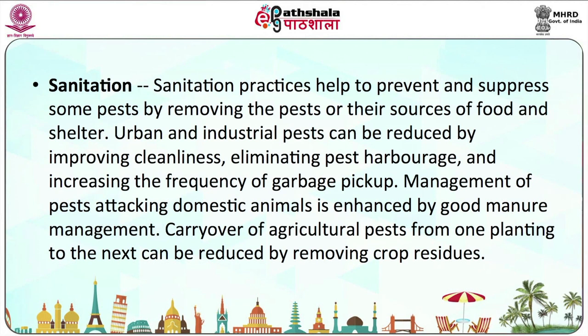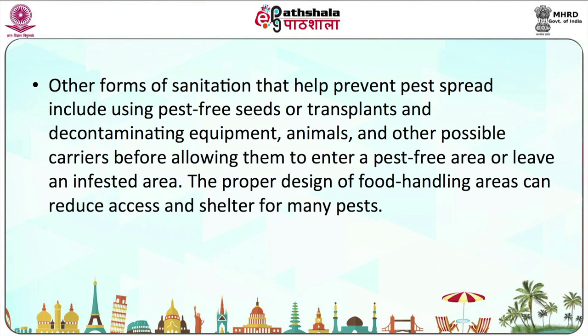Sanitation practices help to prevent and suppress some pests by removing pests or the resources of food and shelter. Urban and industrial pests can be reduced by improving cleanliness, eliminating pest harbourage, and increasing the frequency of garbage pickup. Management of pests attacking domestic animals is enhanced by good manure management. Carryover of agricultural pests from one planting to the next can be reduced by removing crop residues. Other forms of sanitation include using pest-free seeds or transplants and decontaminating equipment, animals, and other possible carriers before allowing them to enter a pest-free area or leave infested areas.